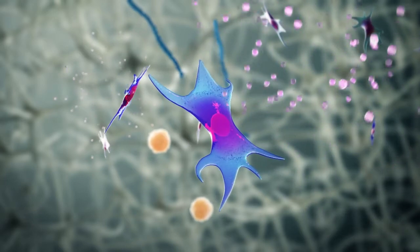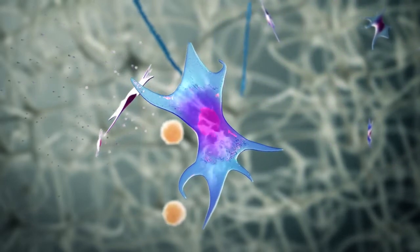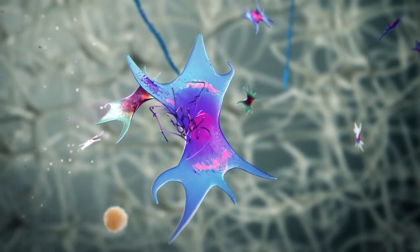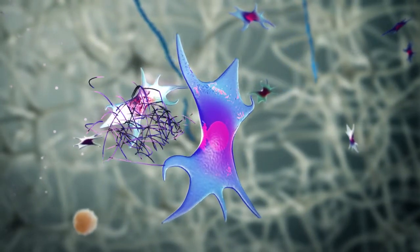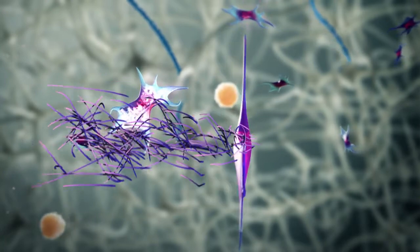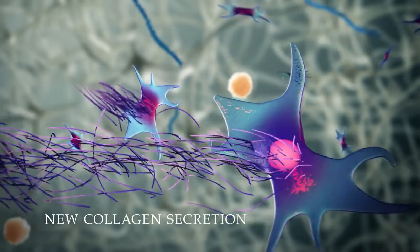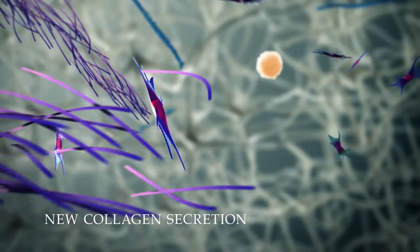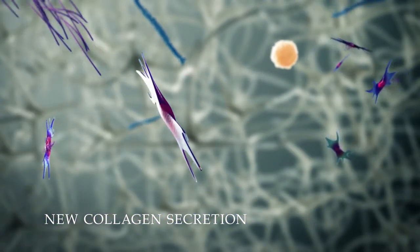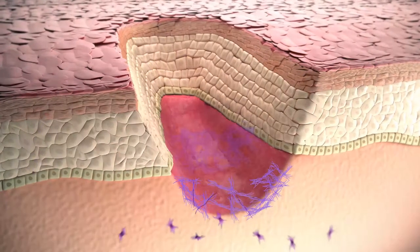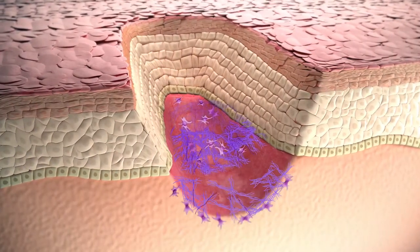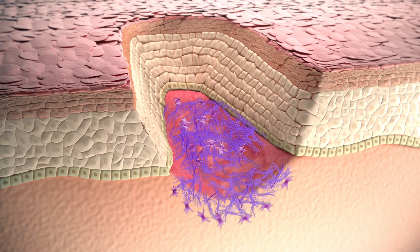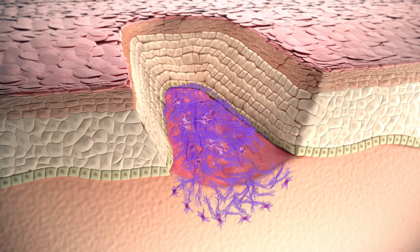As more fibroblasts colonize the wound bed, collagen fibers and other ECM proteins are being synthesized to form a new granulation tissue. Hyaluronan contributes to the new ECM architecture thanks to its capability of assembling large proteoglycan aggregates.